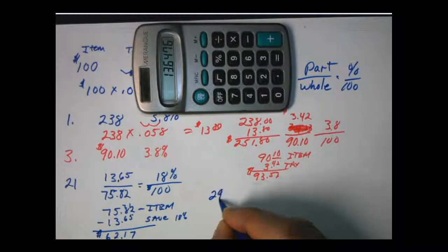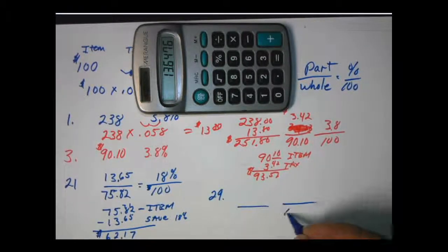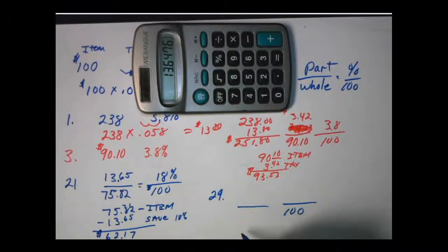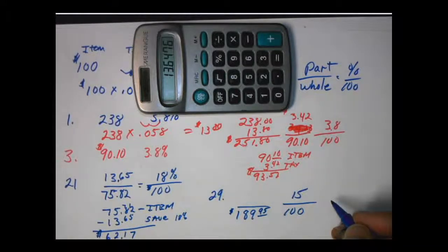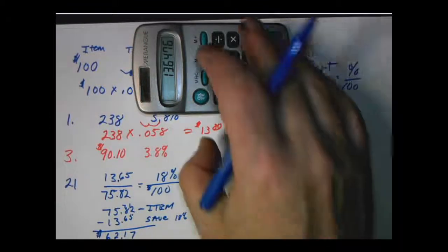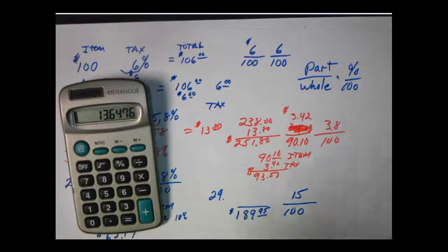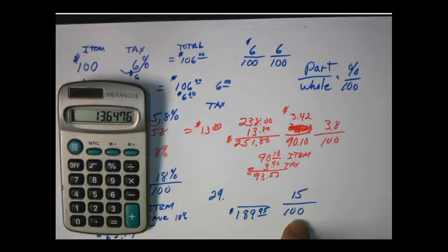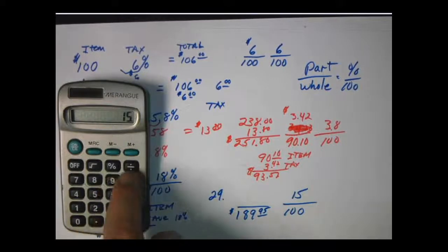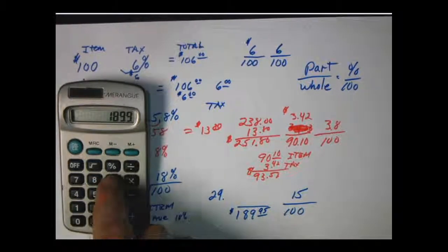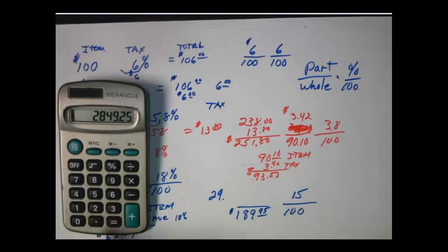It says Joan buys an oil painting at the list price of $189.95. That's the whole thing. That's the list price. I know that that's going to go on the bottom. At a 15% discount. Percents always go over 100. What does she pay for the painting? So we have to find out what the discount is. We don't know what the 15% is. But we have it all set up. Part out of the whole. Percent over 100. So we're going to take our 15 times our 189.95 and then we're going to divide by 100.